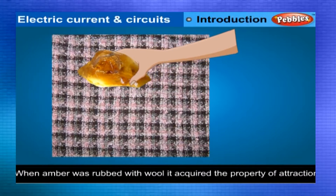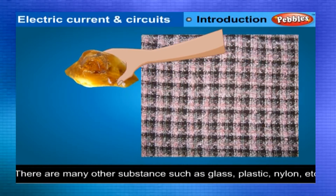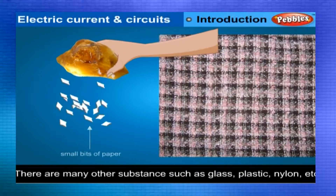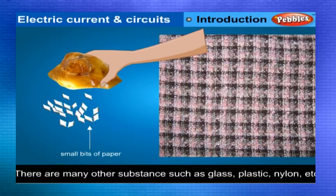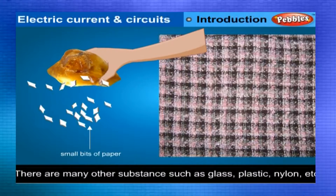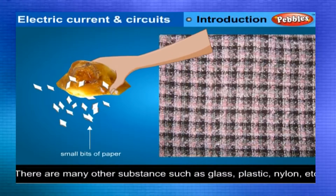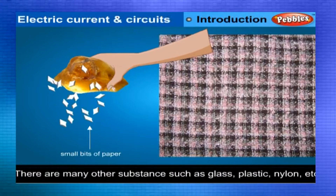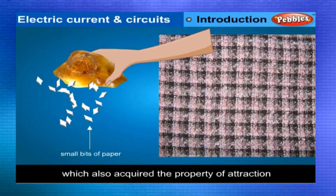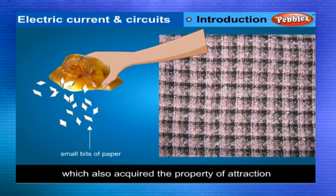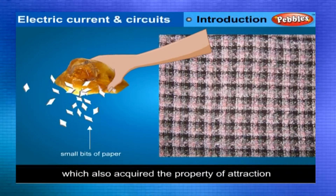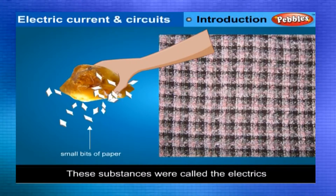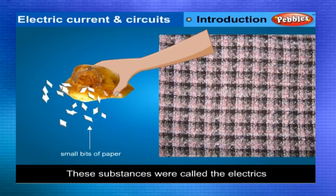Besides amber, there were many other substances such as glass, sealing wax, plastic, nylon, etc., which also acquire the attractive property when they are rubbed with suitable substances. These substances were called the electrics.